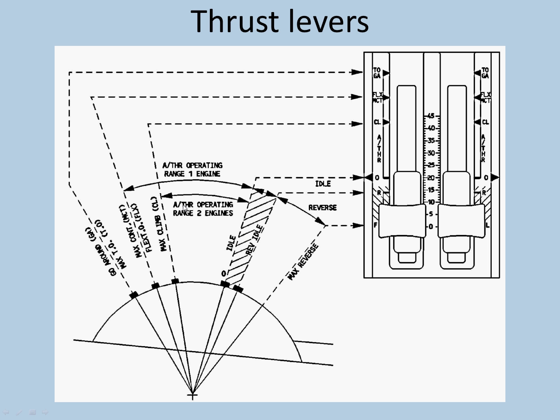Another thing I want to discuss is auto thrust operating range. When two engines are operating, auto thrust will operate between idle and max climb. But if it is a single engine operation, auto thrust range increases from idle to MCT.